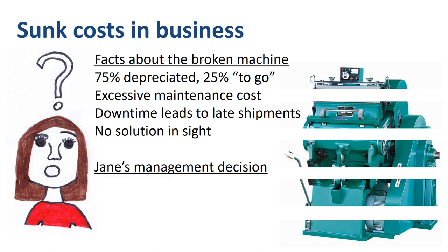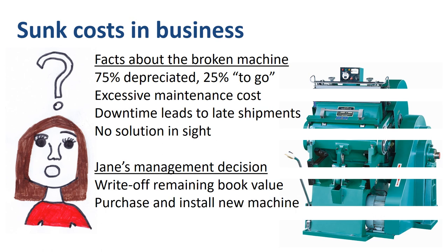Jane checks with her finance manager as well as corporate headquarters. After careful consideration, she initiates a write-off of the remaining book value of the machine, has the broken machine removed, a new machine purchased and installed, and is able to get production and shipments back on track.